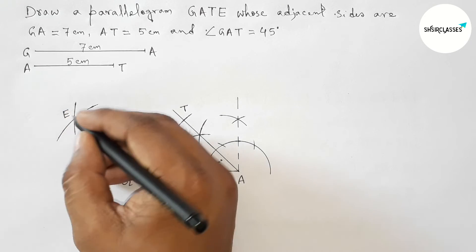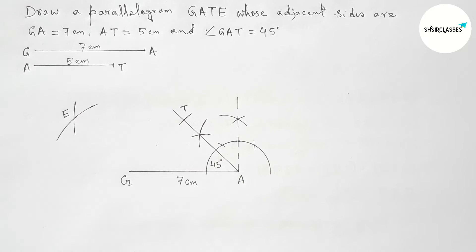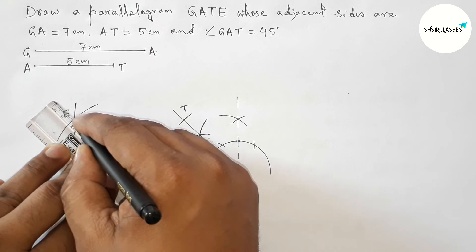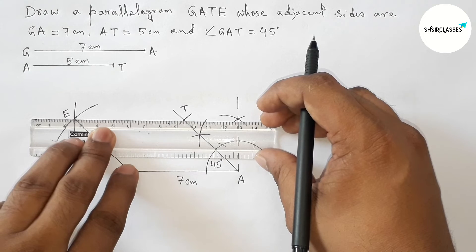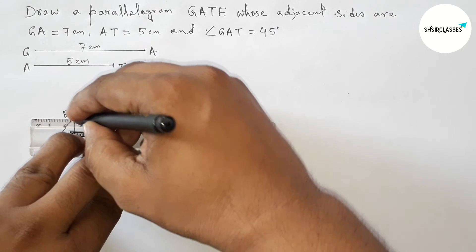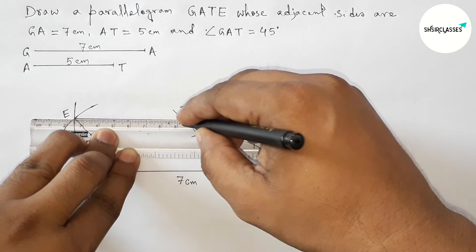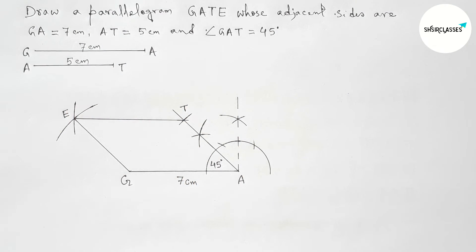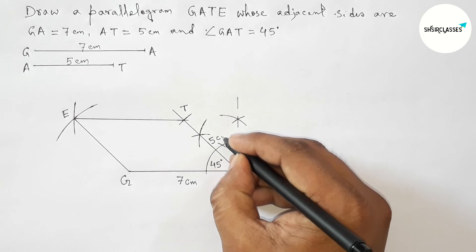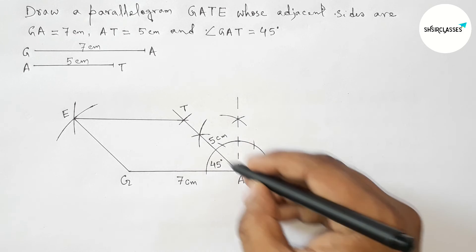Now labeling — taking T here and E here. First joining this line, then joining TE to complete the required parallelogram GATE. This line segment is 5 centimeter.